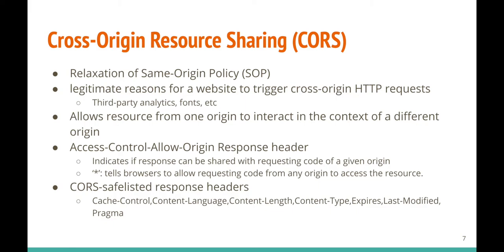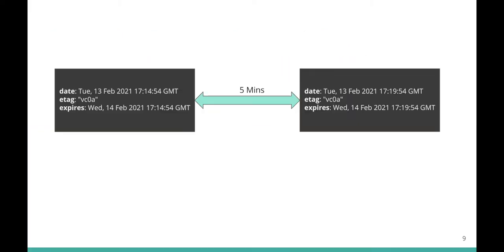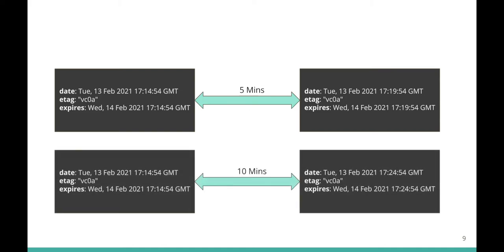Notice that Cache-Control and Expires headers are safelisted, which forms the basis of our attack. Looking at the response headers of the same resource requested multiple times after clearing the cache — once after five minutes, then again after ten minutes — the Date and Expires headers always have a difference of 24 hours in this case. So if we know the value of the Expires header, we can simply subtract 24 hours from it and get the Date header value. That's the attack in a nutshell.